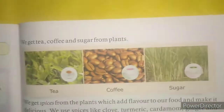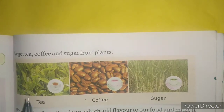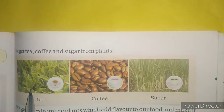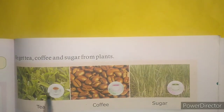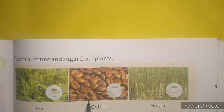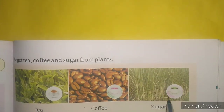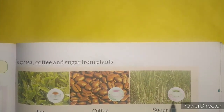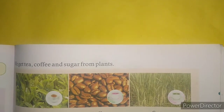We get tea leaves from the plants, by which we make tea. Then we get coffee, coffee seeds, and sugar from sugar cane. This way we get many beverages from the plants.